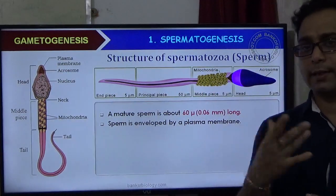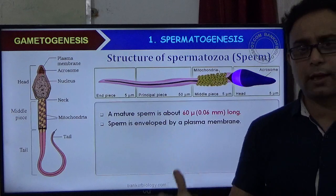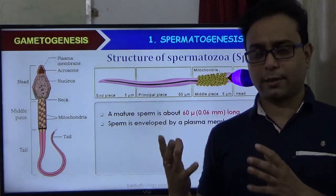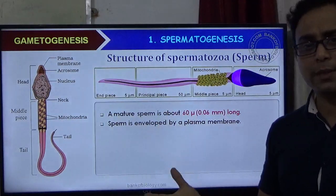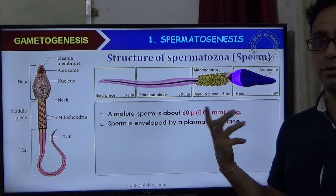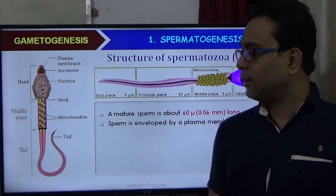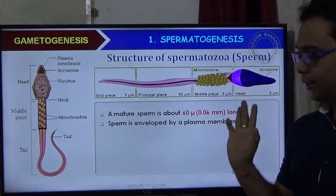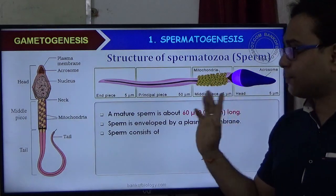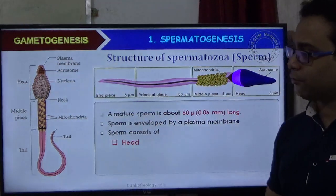This is an animal cell, so there is no cell wall — only a cell membrane. The cell wall is not present because this is not a plant cell. The animal cell has a plasma membrane as its outer covering. This is an important point from the NCERT perspective.